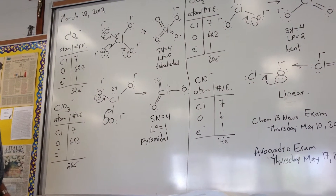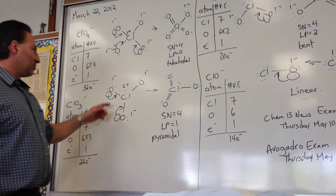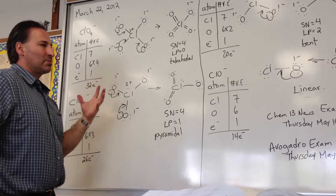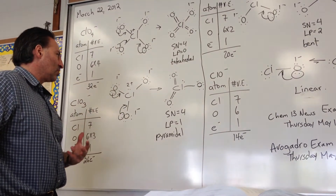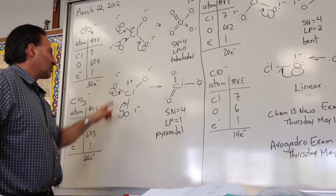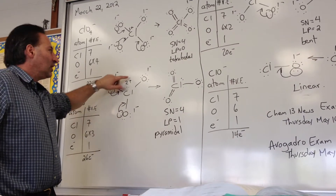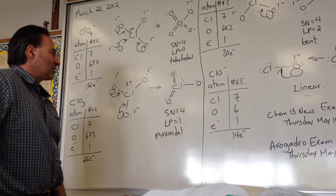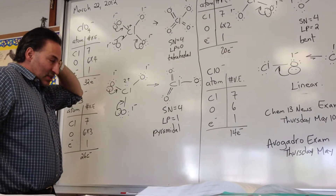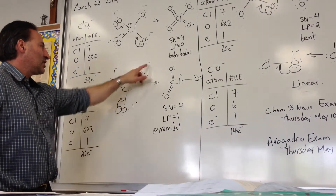The next example is the chlorate anion. Counting the electrons gives us a total of 26. Again, we do a preliminary structure with the three oxygen atoms as satellites. We end up with a formal charge of plus 2 on chlorine, because chlorine likes to possess 7 electrons — lone pairs count as 2, but bonding pairs count only as 1. So this chlorine atom is only in possession of 5 electrons, giving it a formal charge of plus 2. Each oxygen atom, liking to possess 6 electrons, ends up possessing 7, so each has a formal charge of negative 1.